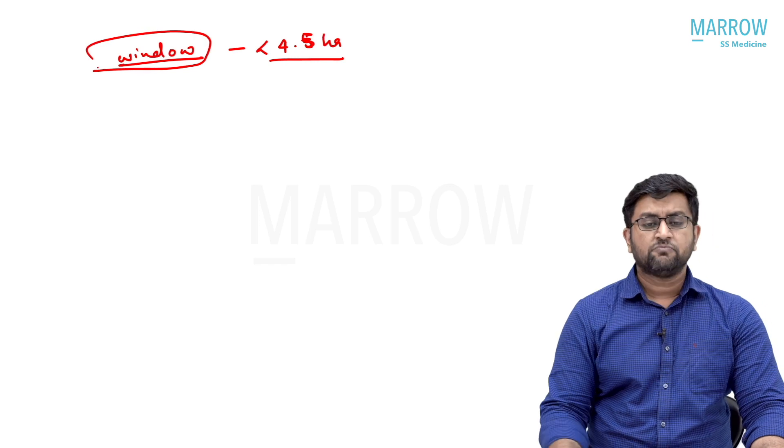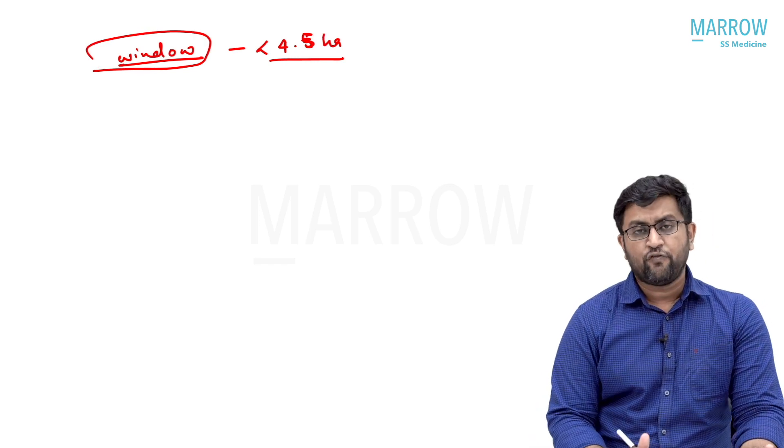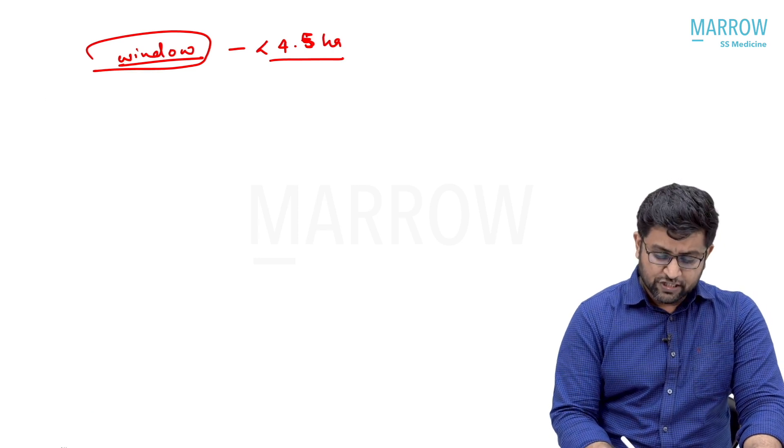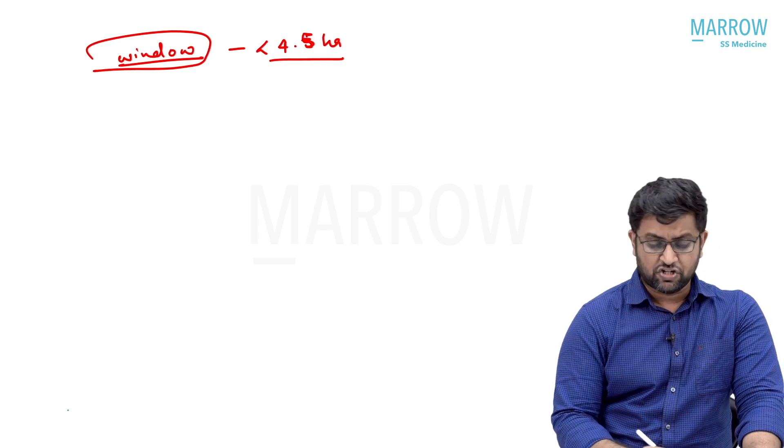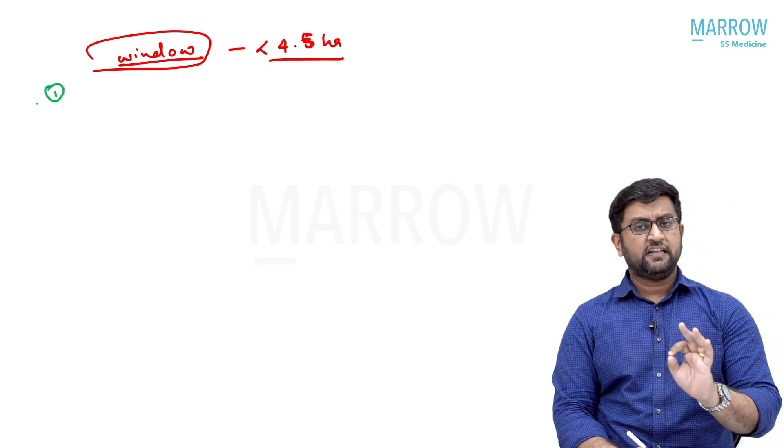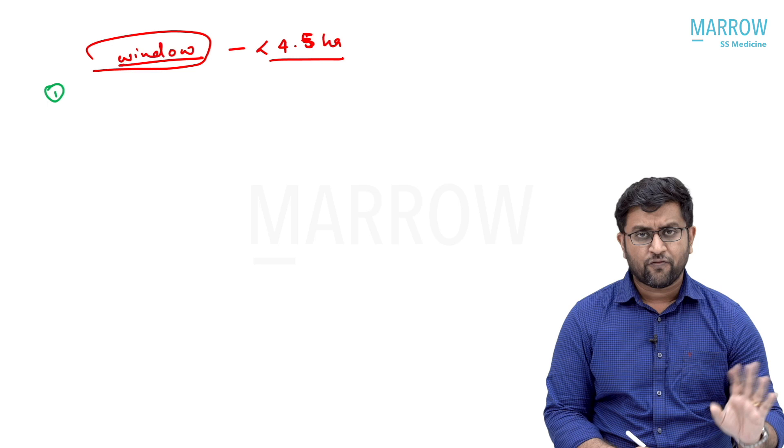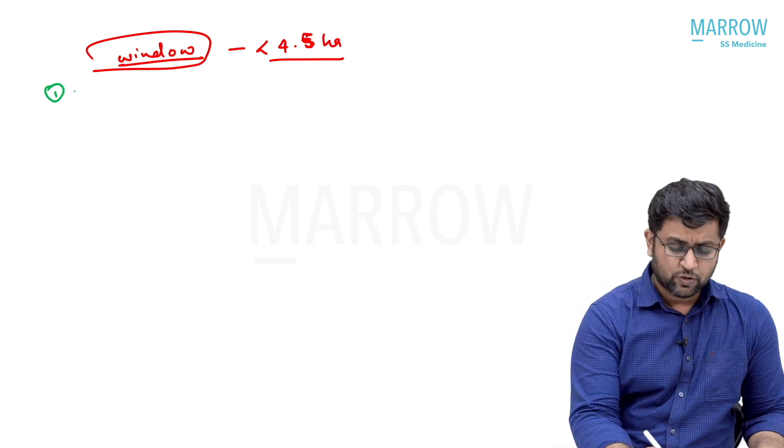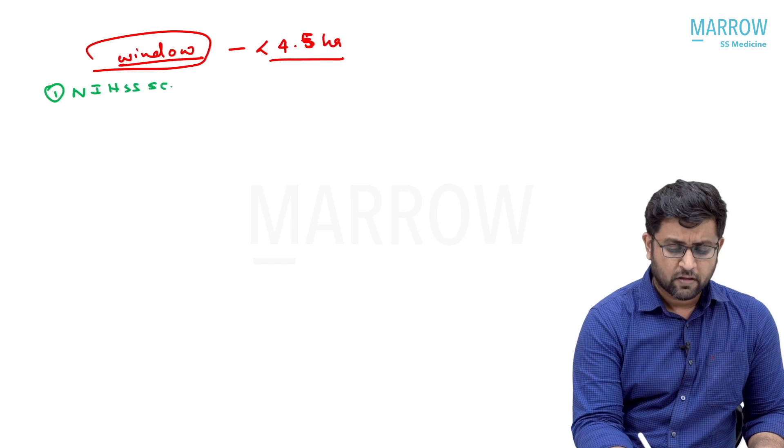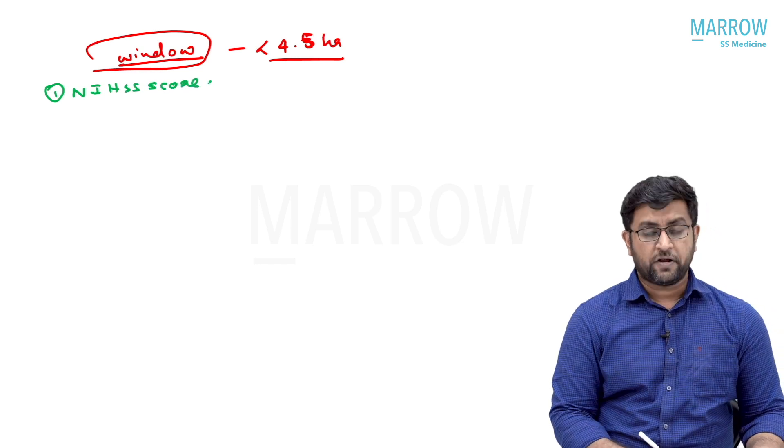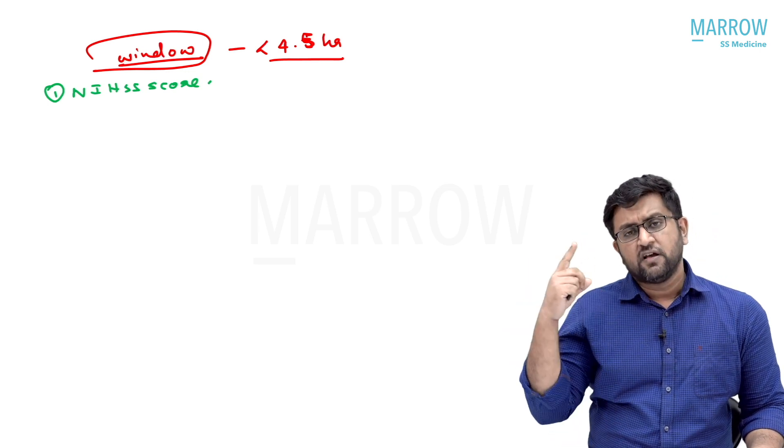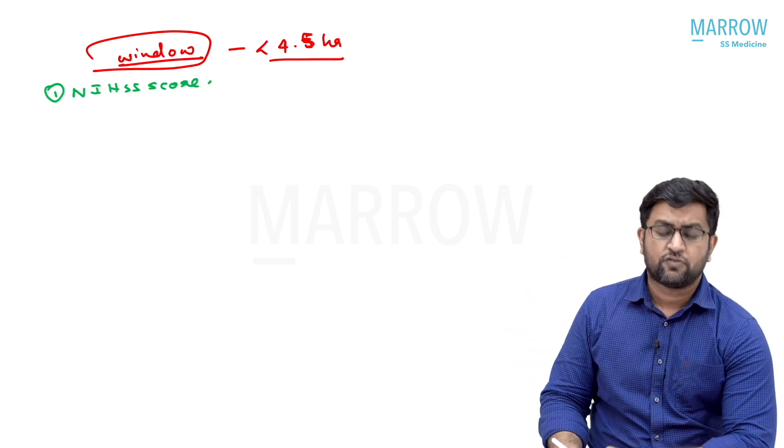If the patient comes to you within a window period of 4.5 hours from onset, you should evaluate the patient first. What investigations will you do in the casualty? You should do minimum investigation. First and foremost, analyze the generalized status, GCS score, and vitals. For stroke specifically, you should score the NIHSS score. NIHSS score should be calculated because your entire decision is going to be based on this score. Your lysis, your intervention, everything is based on the score.